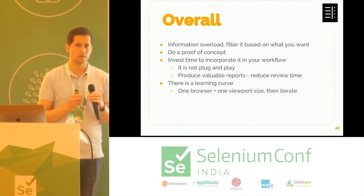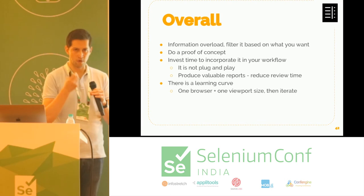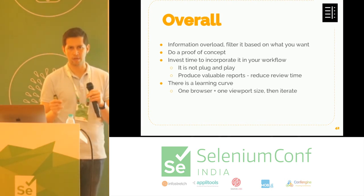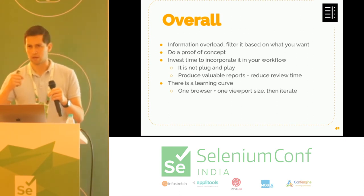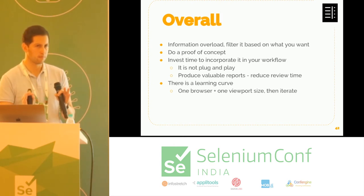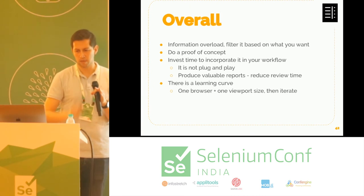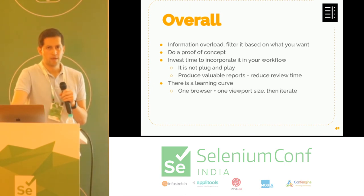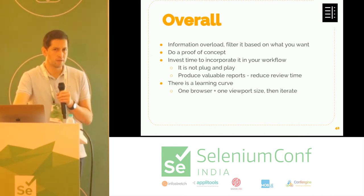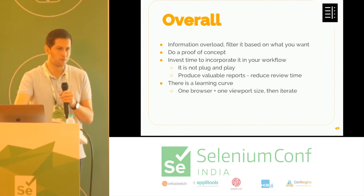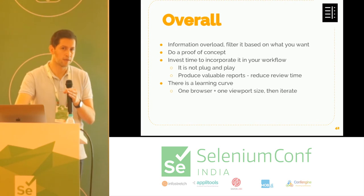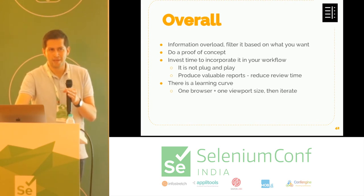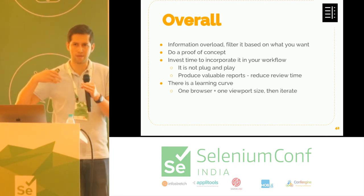The most important thing we found is that whenever the new tool finds a problem, you need to have a link-to-action. If an image isn't working, you need a link that says approve, reject, send an email, call someone — do something. Not just plain information. And this is a learning curve — if you want to add visual testing, just add visual testing from the start. Don't add cross-browser testing or mobile at the same time. Start one by one, because if you add visual testing and get tons of reports, and then also add Firefox and Edge, you get that four times — and you're not going to like the tool because of information overload.